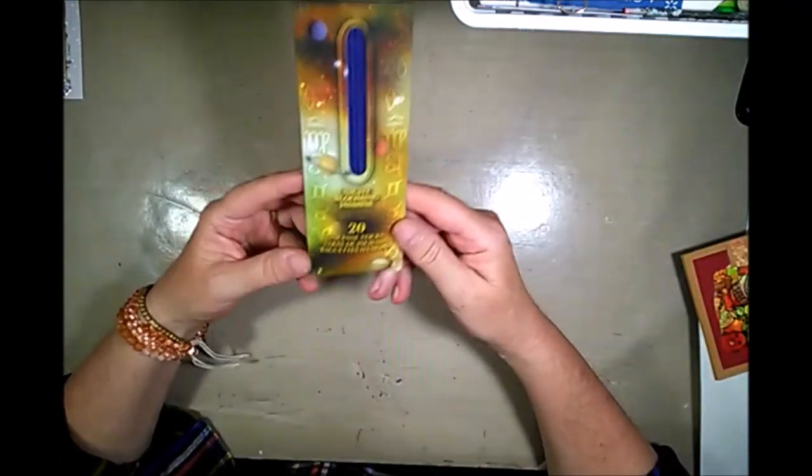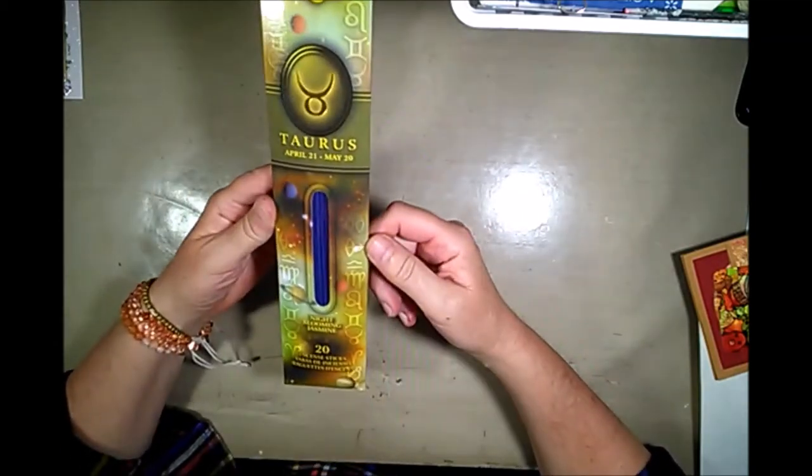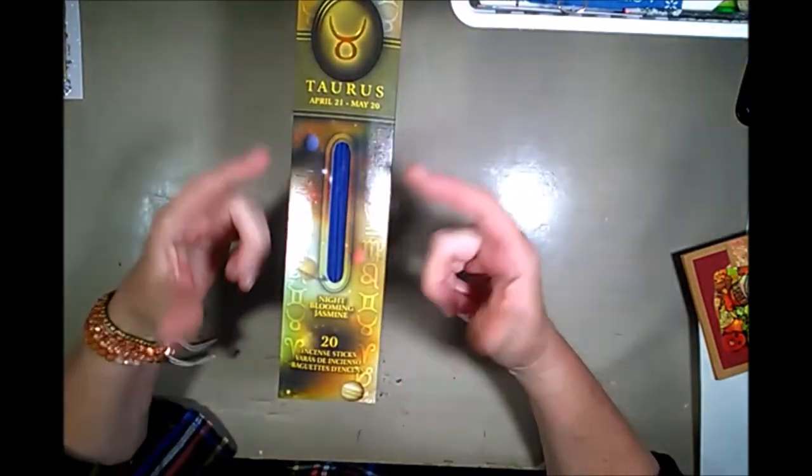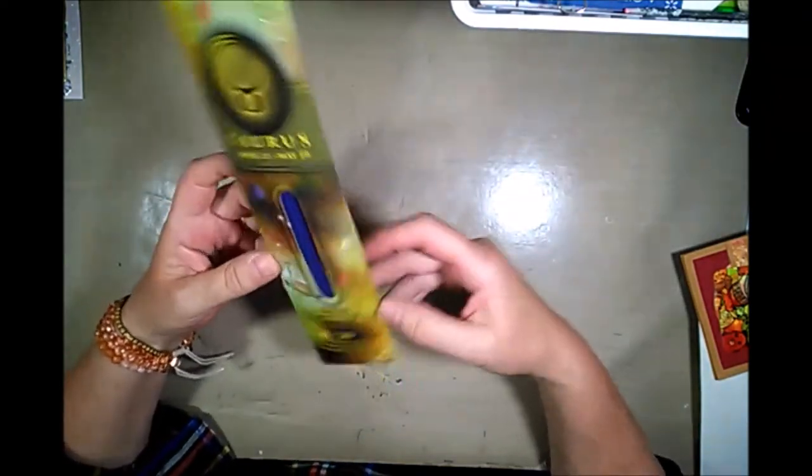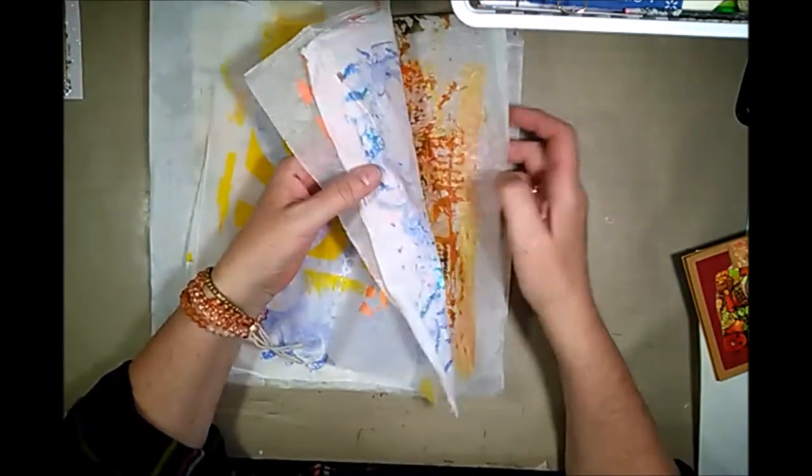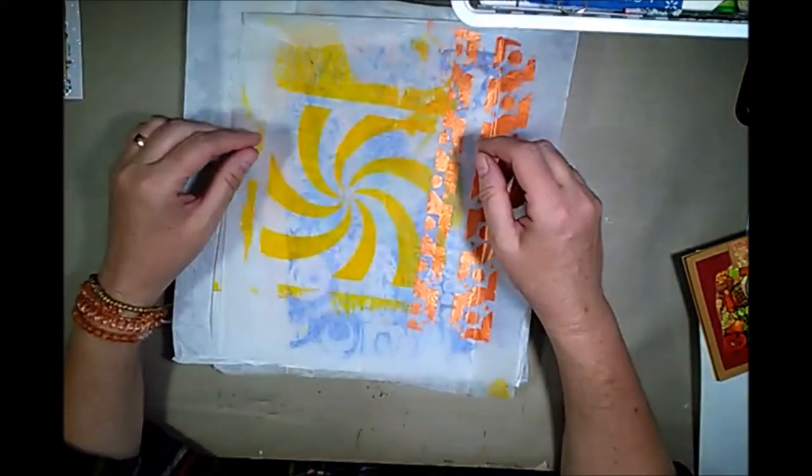And she sent me some incense, and there's a Taurus on it. How did you know I was a Taurus? So this is really fun. I used to love these when I was a hippie and I still do. These are jasmine, smell really nice. Thank you. And then she sent me some jelly plate prints, and she really does a very good job with these jelly plates.